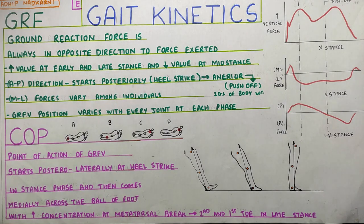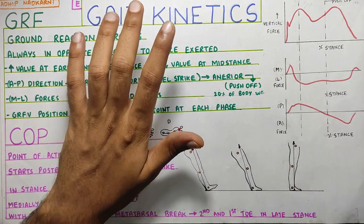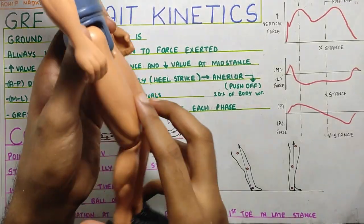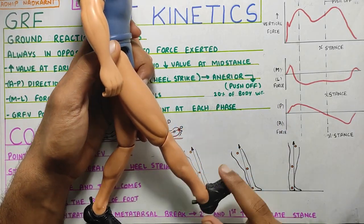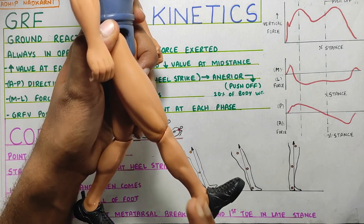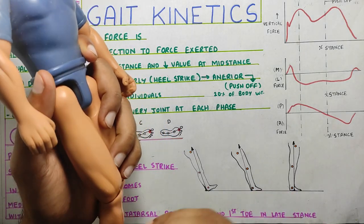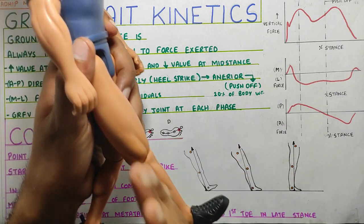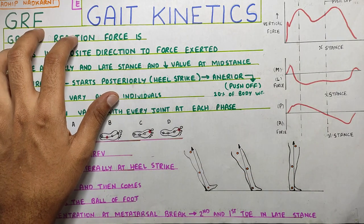Ground reaction force is basically always opposite in direction to the force that you exert on the ground. So if you take Joe and if he's walking, whenever he does a heel strike, he will be exerting force onto the ground, and the ground will exert force back at him. That is your ground reaction force, which is equal in magnitude and opposite in direction. So that is the first force that we are going to talk about.